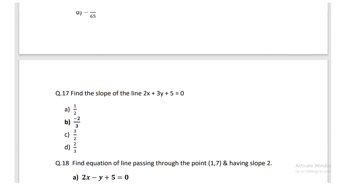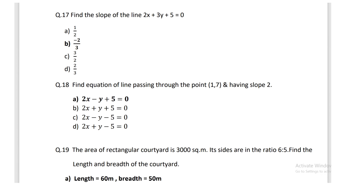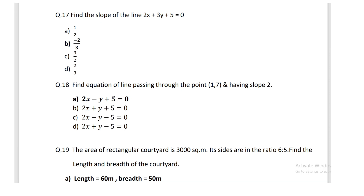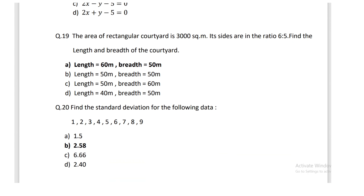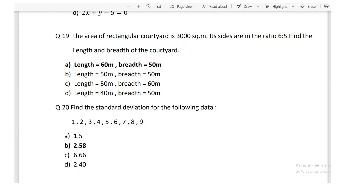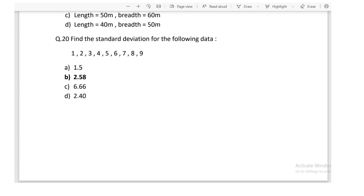Find the slope of line 2x + 3y + 5 = 0; slope is −2/3. Find the equation of line through (1, 7) with slope 2; the equation is 2x − y + 5 = 0. The area of a rectangular courtyard of 3000 m² with sides in ratio 6:5 gives length 60 m and breadth 50 m. Standard deviation for the data 1 through 9 is 2.58.